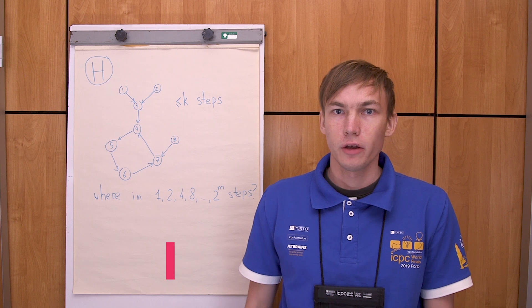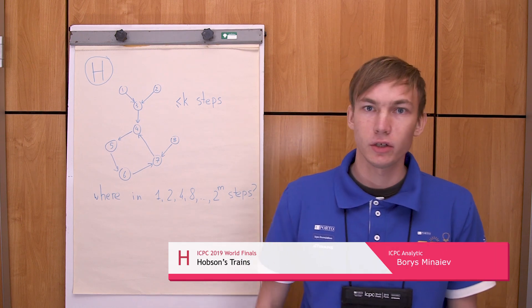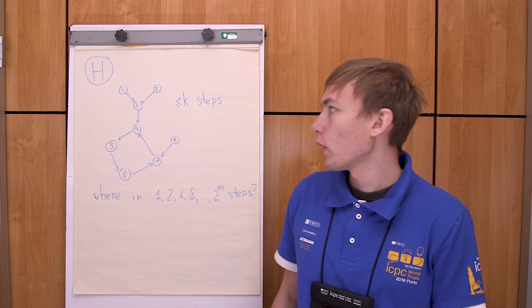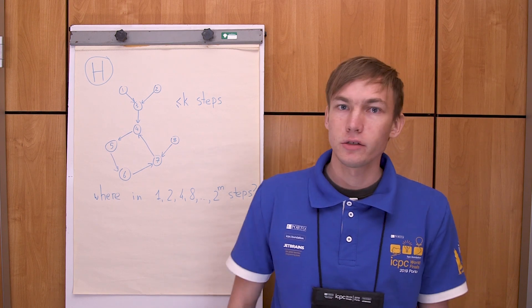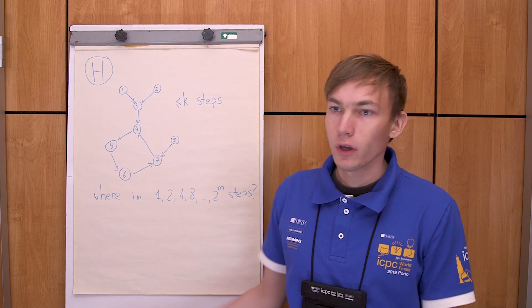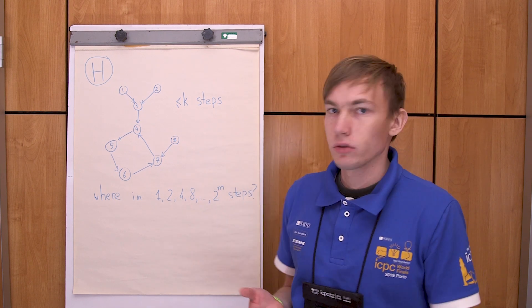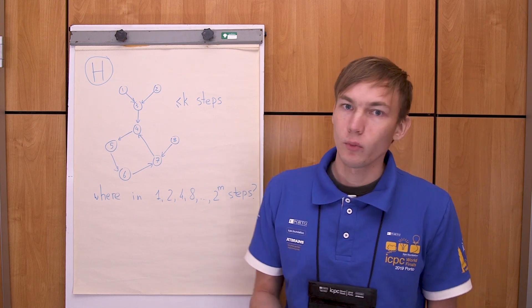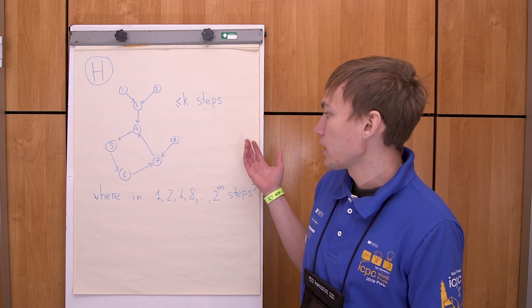So let's talk about problem H. In this problem you are given a directed graph with a special property that from each vertex you have only one outgoing edge. For this graph you are also given an integer k, and for each vertex you need to count the number of other vertices that you can reach from the given one with at most k steps.